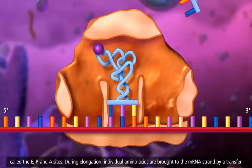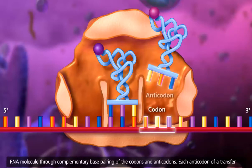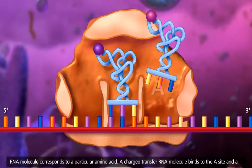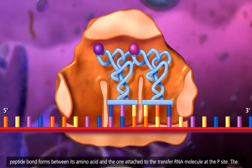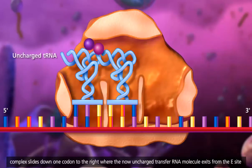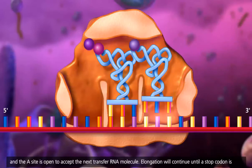During elongation, individual amino acids are brought to the messenger RNA strand by a transfer RNA molecule through complementary base pairing of the codons and anticodons. Each anticodon of a transfer RNA molecule corresponds to a particular amino acid. A charged transfer RNA molecule binds to the A site, and a peptide bond forms between its amino acid and the one attached to the transfer RNA molecule at the P site. The complex slides down one codon to the right, where the now uncharged transfer RNA molecule exits from the E site, and the A site is open to accept the next transfer RNA molecule.